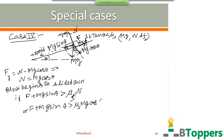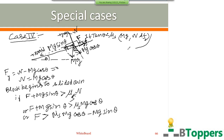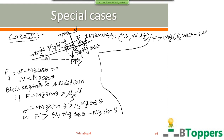Substituting N equal to mg cos θ on the right side: the block begins to slide down if F plus mg sin θ is greater than νs mg cos θ. Rearranging, the block begins to slide down if F is greater than νs mg cos θ minus mg sin θ. So the minimum force required to be applied to the block parallel to the inclined surface so that the block just starts sliding down is F_min equal to mg(νs cos θ − sin θ).